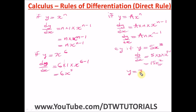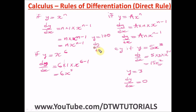Also, when you have y equal to a constant — for example y = 3 or y = 100 — which is not an algebraic expression, then dy/dx is equal to zero. The derivative of any constant is simply zero.